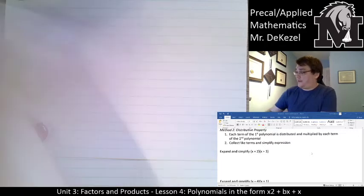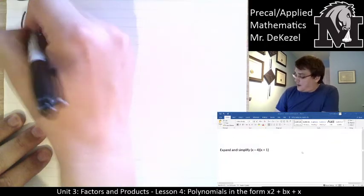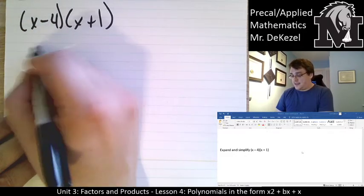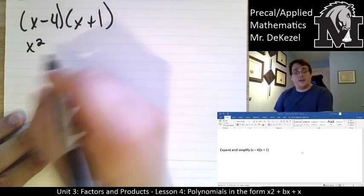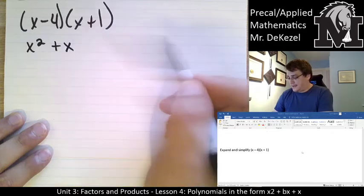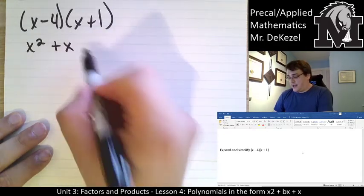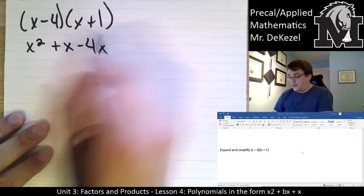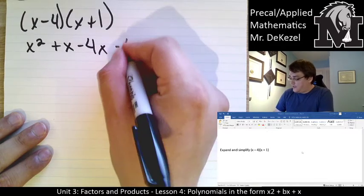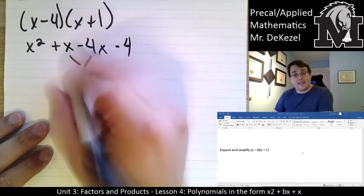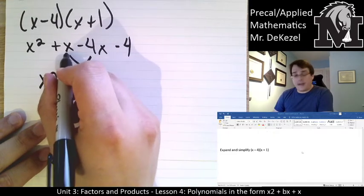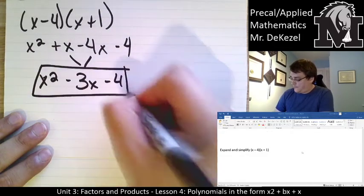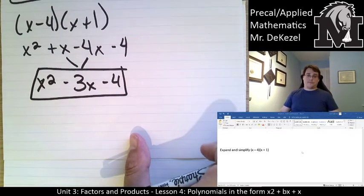So we have x minus 4 and x plus 1. The first values are x and x, so that's x squared. The outside values are x and 1, so that's plus x. Inside is negative 4 and x, that's negative 4x. And the last is negative 4 times plus 1, so that should be minus 4. We're then going to combine the two inside like terms. That's x squared, x minus 4x, so that's minus 3x minus 4. Like that, that's your final answer. So first, outside, inside, last: FOIL.